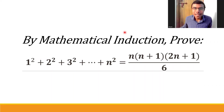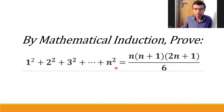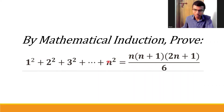Hello learners. Now let us see how to prove the equation 1² + 2² + 3² up to n² equals the closed-form expression, by mathematical induction.